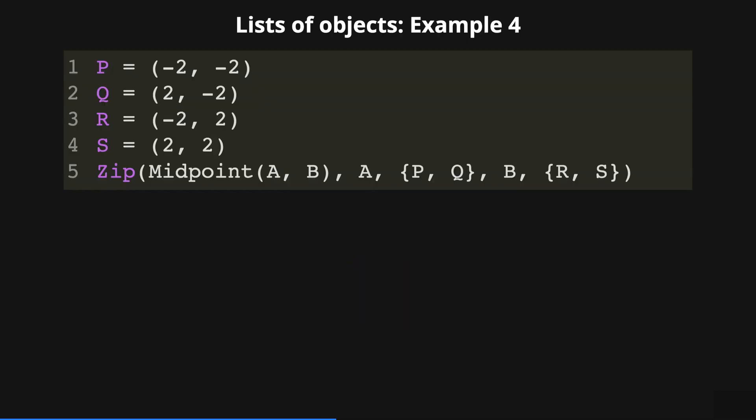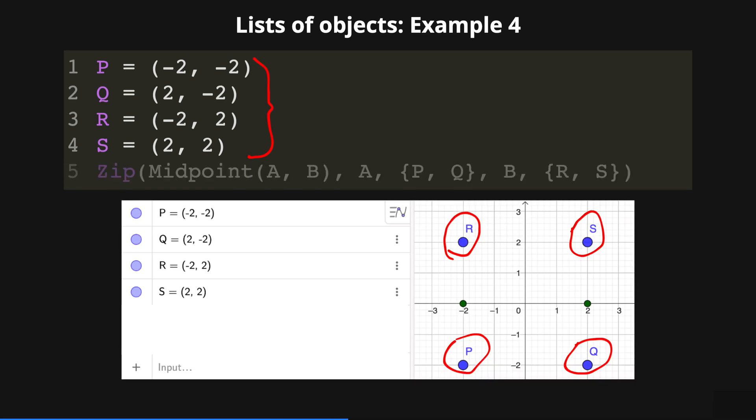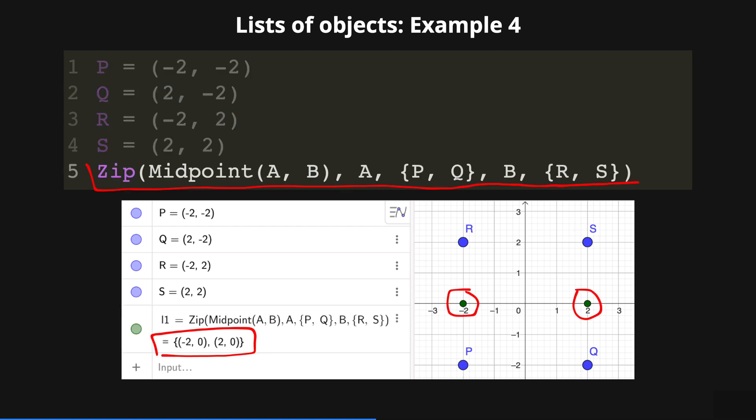Let's analyze what this algebra code does. The first four lines create points P, Q, R and S. Then the zip command creates the midpoints of two sets of points. The expression here is the midpoint between points A and B acting as variables. The variable A belongs to the list P, Q and the variable B belongs to the list R, S.